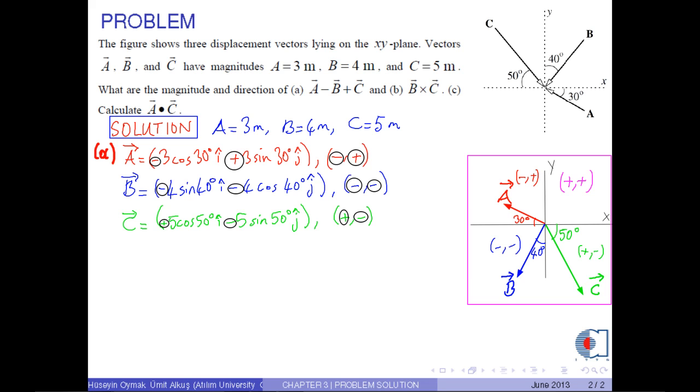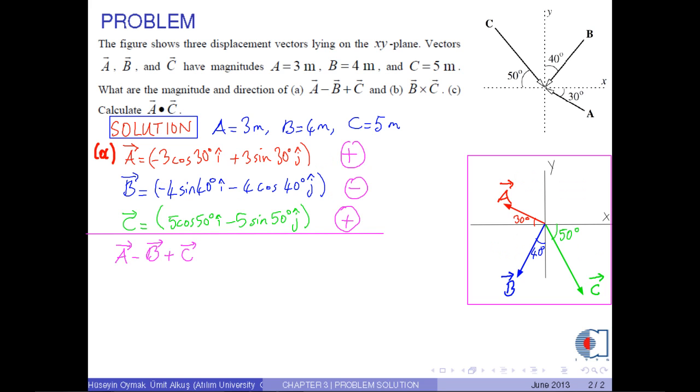Then A minus B plus C is equal to minus 3 cosine 30 degrees plus 4 sine 40 degrees plus 5 cosine 50 degrees i hat.